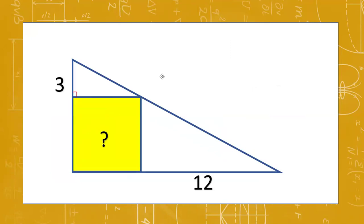This angle is 90 degrees, and we are proving that these two triangles are similar. This line and this line are parallel because this is a square, and therefore this angle is equal to this angle. Similarly, this line is parallel to this line, and therefore these two angles are equal. Therefore, this triangle and this triangle are similar.